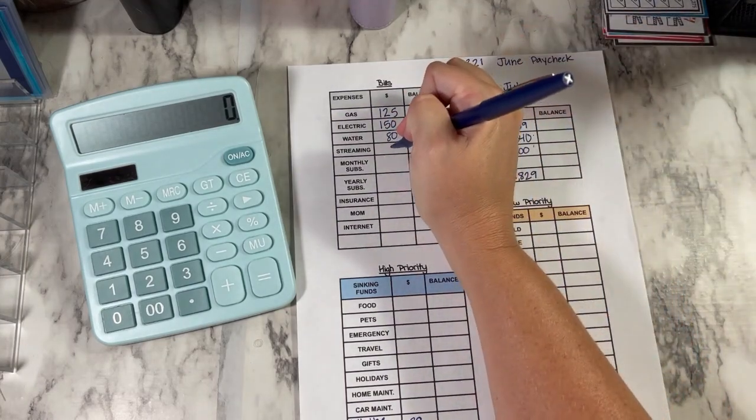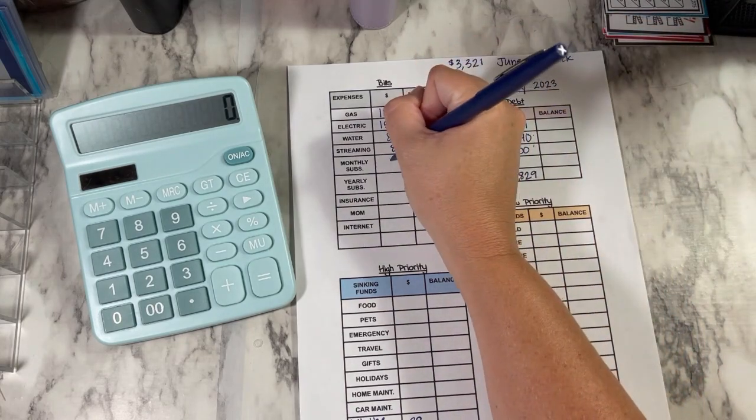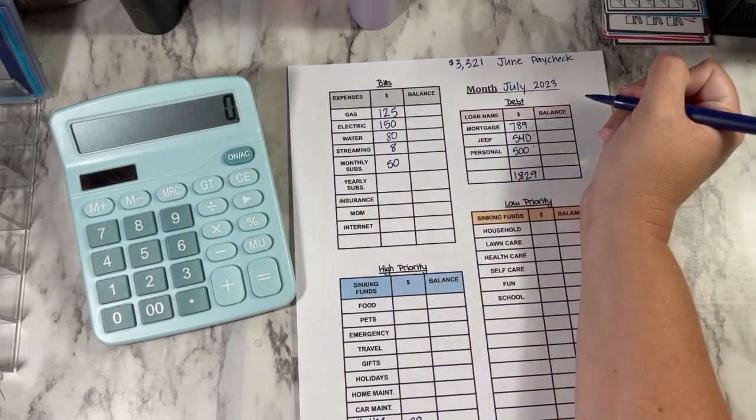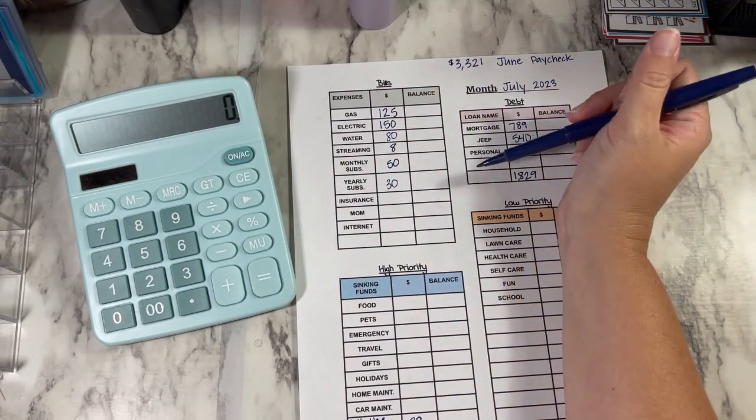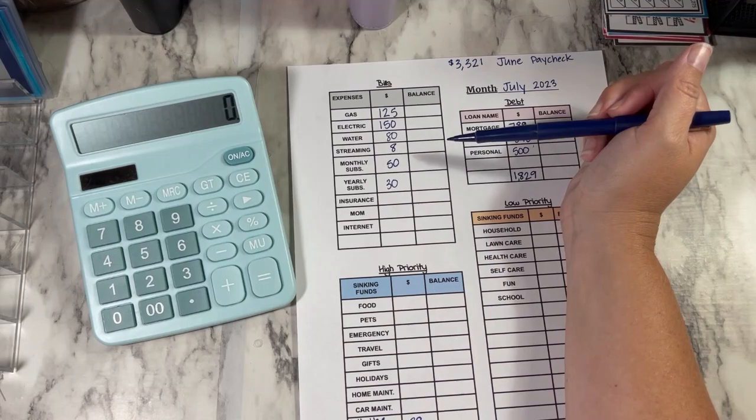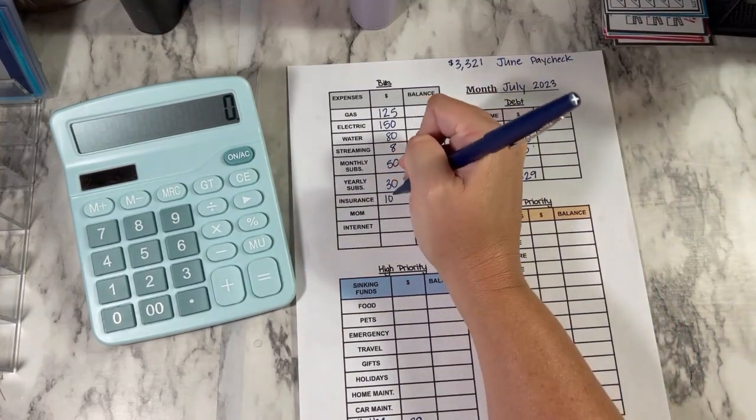Streaming is $8. I only have SiriusXM right now. Monthly subs is $50. Yearly subs is $30. This is just where I go ahead and start saving. So I have that money when each subscription comes out. My insurance for my car is $102.